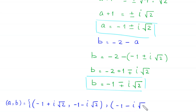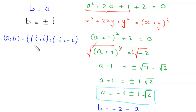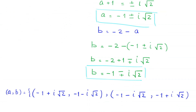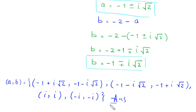The final answer includes four solution pairs. The first two pairs from Case 2 are: (negative 1 plus i root 2, negative 1 minus i root 2) and (negative 1 minus i root 2, negative 1 plus i root 2). The last two pairs from Case 1 are: (i, i) and (negative i, negative i).